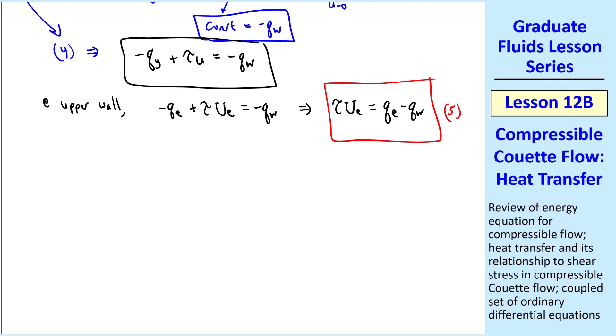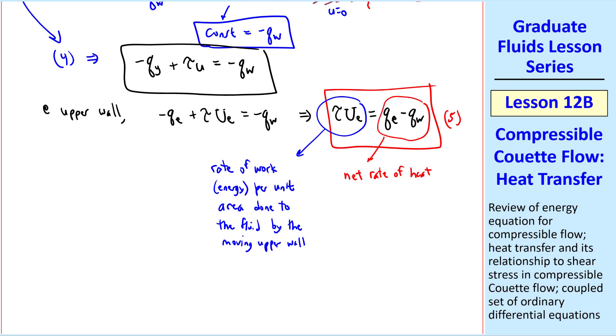Before I solve any further, I want to point out the physical significance of this equation. This term, a shear stress, which is a force per unit area, times a speed, is the rate of work, and work is also energy, per unit area, done to the fluid by the moving upper wall. It's work that's required to overcome the friction on that upper plate.